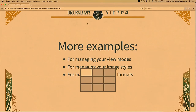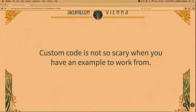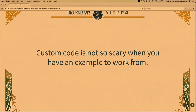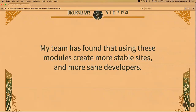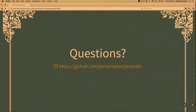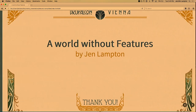We talked about how custom code is not that scary if you have an example to work from, and this is open source — I've open-sourced all my code. You can find it at github.com/jenlampton/test-generate. If you want to refer to this in the future, you totally can. This works for me; it might not work for you. Feel free to give it a try. And we're out of time. If you do have questions, feel free to meet me in the hall — there's another talk starting in about three minutes.